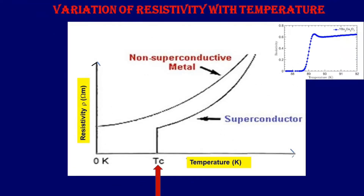Superconductors are a very special category of materials whose resistivity drops down to almost zero at a temperature well above 0 Kelvin, known as the transition temperature Tc. Thus, below Tc, the conductivity is extremely large and so the phenomenon is named superconductivity.